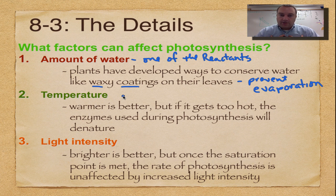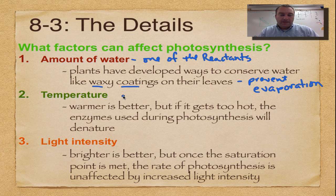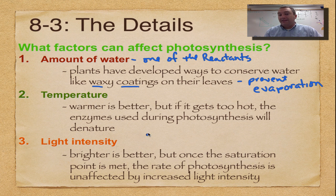Temperature is really important. Here in Indiana it gets cold in the winter — right now it's starting to get cold and our trees have already dropped their leaves, because during winter it's too cold to do photosynthesis properly. A few plants like evergreens have developed ways to do photosynthesis during winter, but even for them their photosynthetic rate is much slower in winter than in summer.